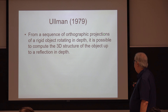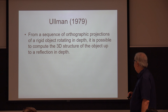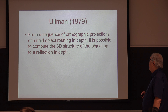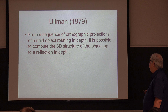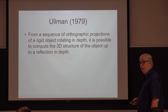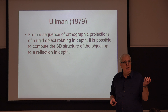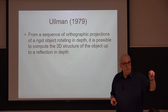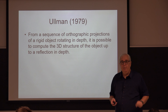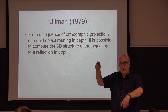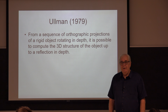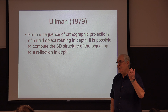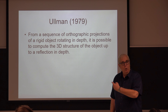In doing so, Ullman was able to prove a theorem: from a sequence of orthographic projections of a rigid object rotating in depth, it's possible to compute the 3D structure of an object up to a reflection in depth. He developed a computational model where you take a series of still images, measure the positions of the points in each image, set up simultaneous equations, and calculate the 3D coordinates of each point in the scene.